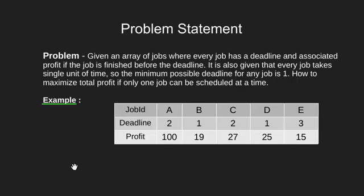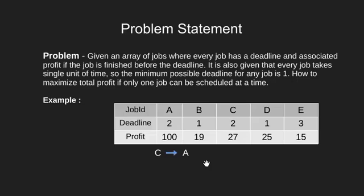Let's look at the answer sequence. We schedule job C from 0 to 1 second. From 1 to 2 seconds we do job A. Now 2 seconds have passed and our total profit made is 127. The only remaining job with a valid deadline is E. We schedule it from 2 to 3 seconds, and our total profit becomes 142, which is the maximum possible profit.